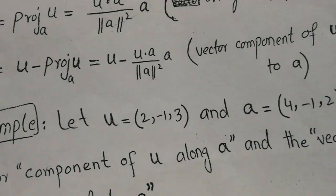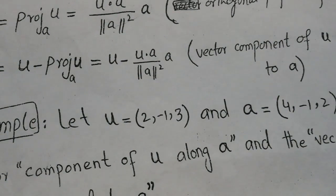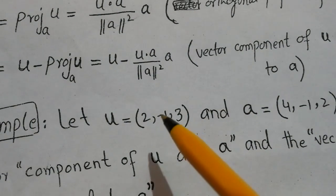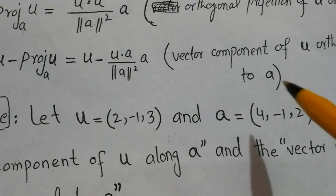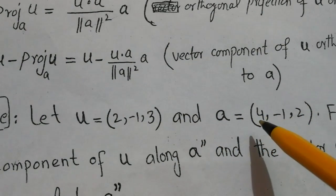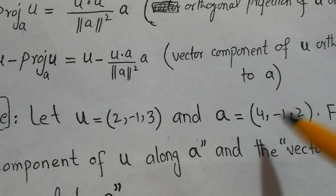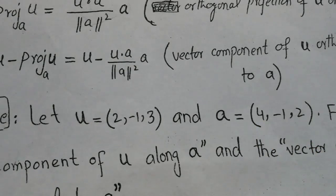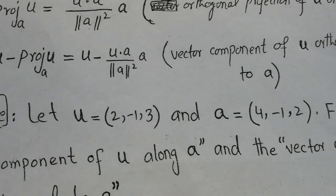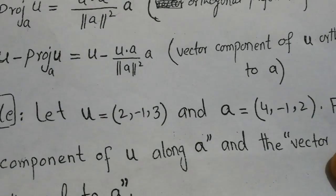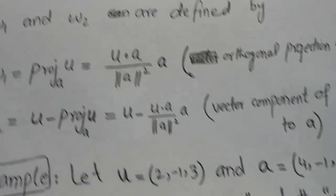Let's consider this example. Suppose we have a vector u with components 2, -1, 3, and there's another vector a with components 4, -1, and 2. We need to know a few things before going to the question.